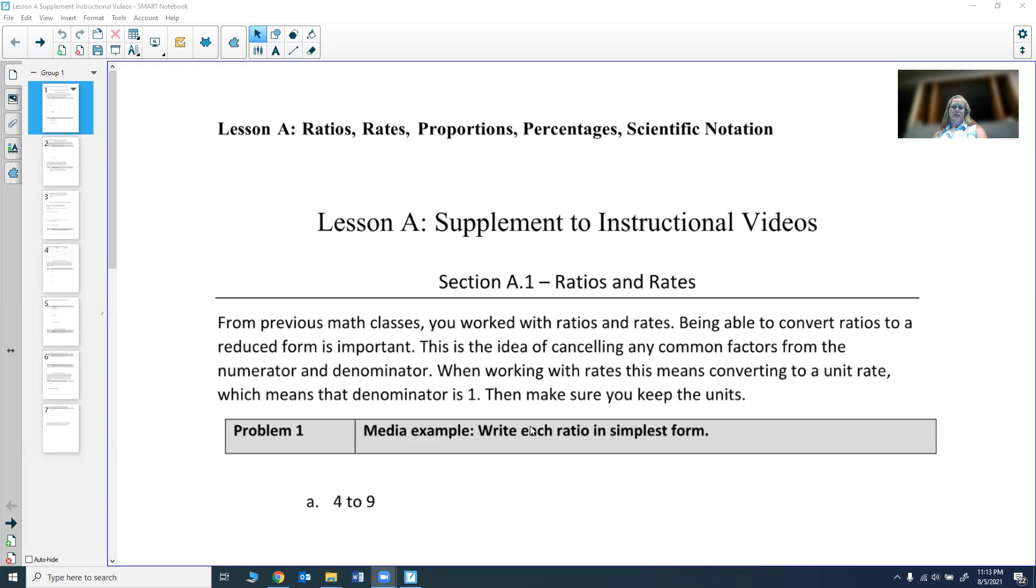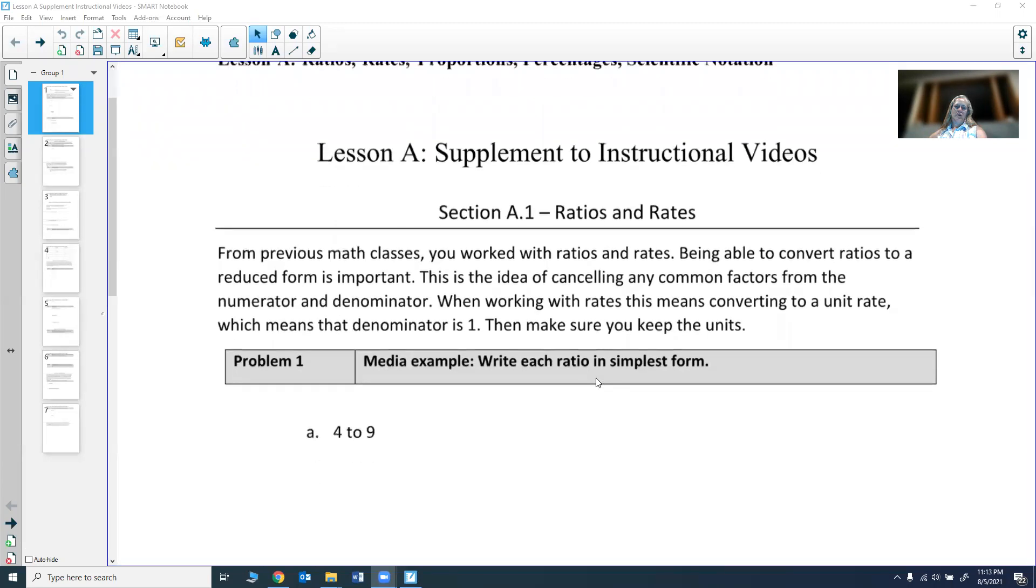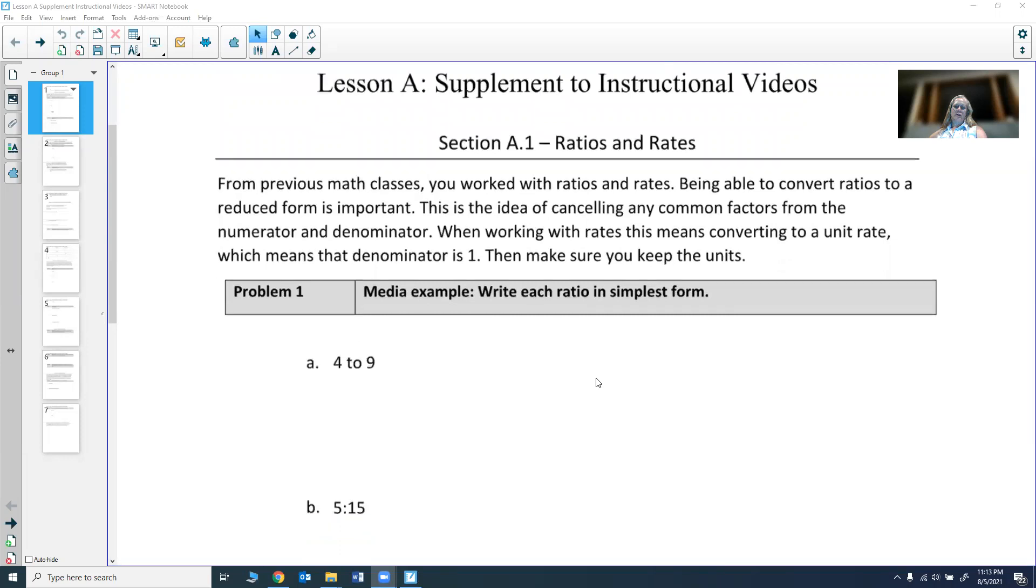When you've worked with ratios and rates in previous courses, you have been able to convert ratios to a reduced form, which is important. This is the idea of canceling any common factors in the numerator and denominator. When working with rates, this means converting to a unit rate in most cases, which means that the denominator is 1, then make sure you keep the units.